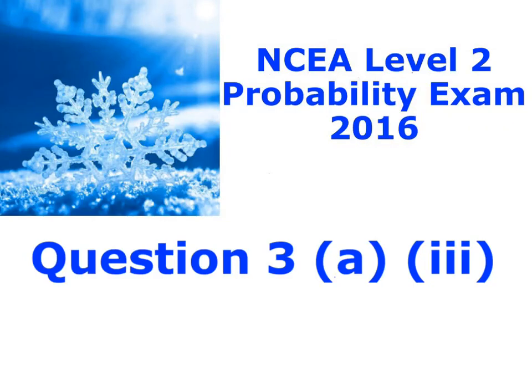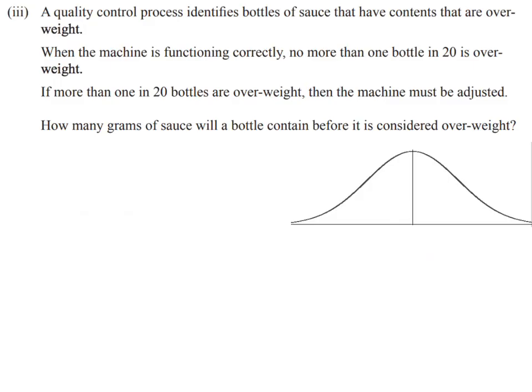Question 3a, part 3. So we've got our normal distribution for weights of apple sauce, and they have a mean of 310 grams with a standard deviation of 4.5 grams.